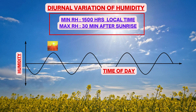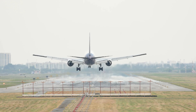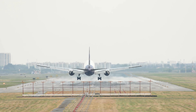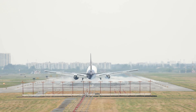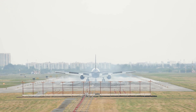Diurnal variation of humidity: air can contain more moisture at higher temperature, so maximum relative humidity occurs when temperature is minimum — half an hour after sunrise. Minimum relative humidity occurs when temperature is at its maximum, which is at 1500 hours local time. Hope this video has helped you in understanding density and humidity in meteorology. With this we have arrived at our destination — hope to see you soon on board for the next flight. Like, share, subscribe, and comment. Happy learnings!